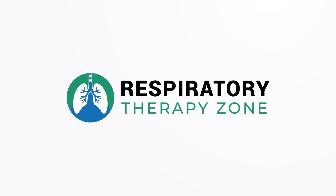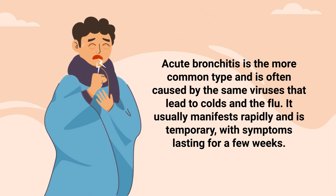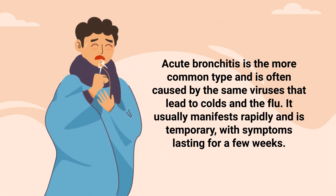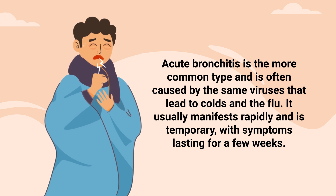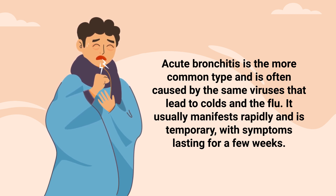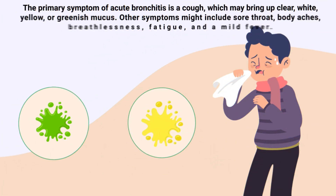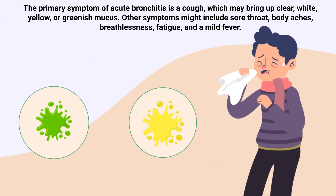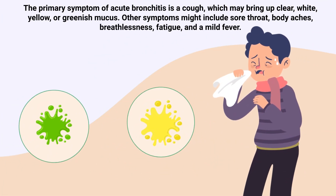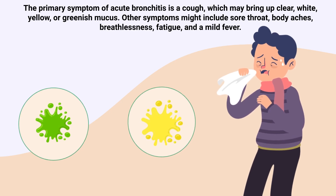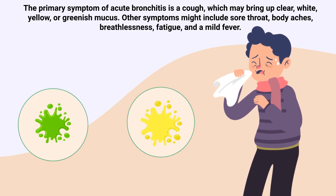Acute bronchitis is the more common type and is often caused by the same viruses that lead to colds and the flu. It usually manifests rapidly and is temporary, with symptoms lasting for a few weeks. The primary symptom of acute bronchitis is a cough, which may bring up clear, white, yellow, or greenish mucus.